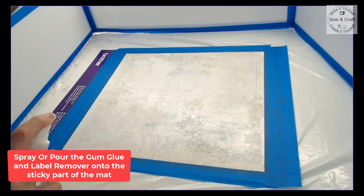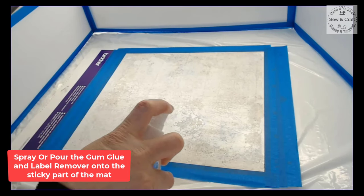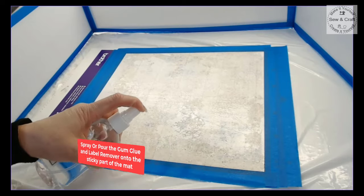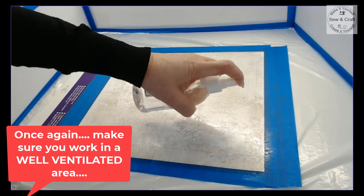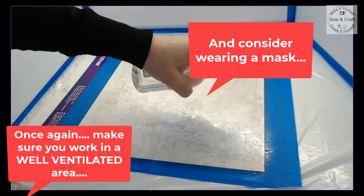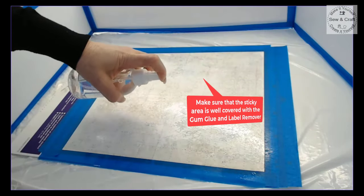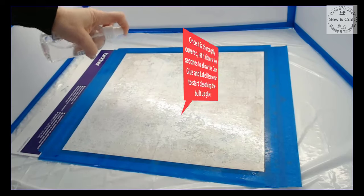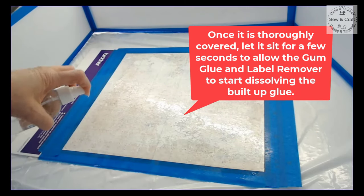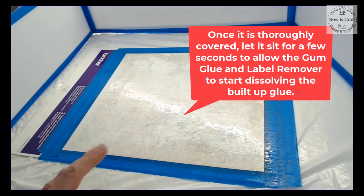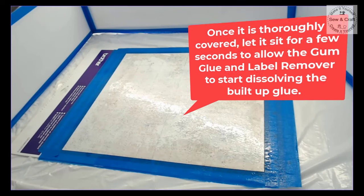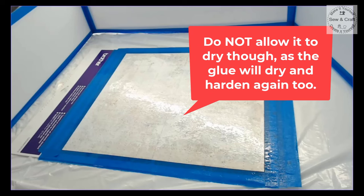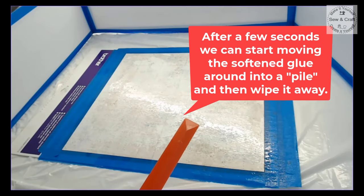You can spray or pour the gum glue and label remover onto the sticky part of the mat but just make sure that you are working in a well ventilated area and consider wearing a mask too. You need to make sure that the sticky area is well covered with that gum glue and label remover so it must be fairly wet. Once it is thoroughly covered let it sit for a few seconds to allow the gum glue and label remover to start dissolving that built up glue. Do not allow it to dry because if it dries the glue will dry and it'll harden again too. Once the glue is softened we can start moving it around into a little pile and then wipe it away.